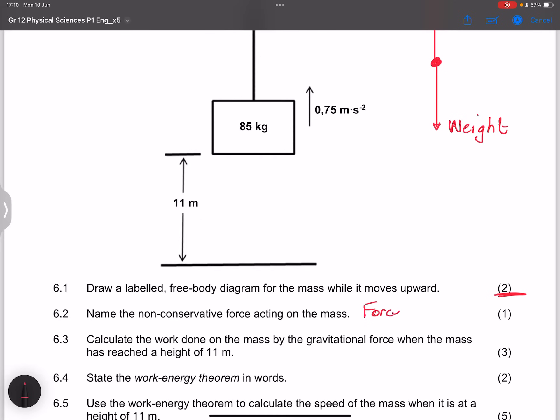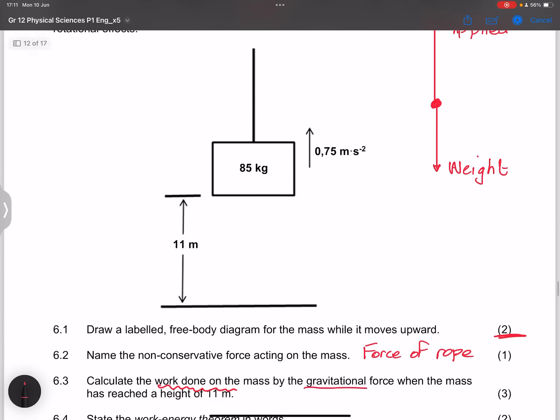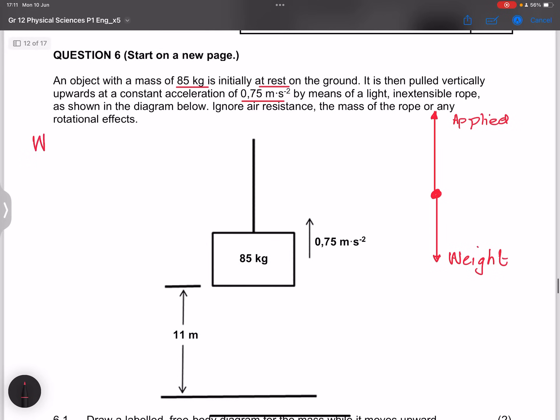Okay, force of the rope. Now they say calculate the work done on the mass by the gravitational force when the mass has reached a height of 11 meters. So what are we looking for? We're looking for the work done by gravitational force. Note that by the way this object is going upwards, so of course we're going to take upwards direction as positive.